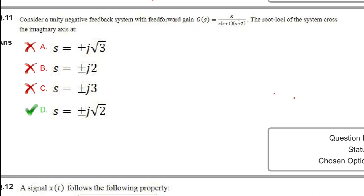G(s) is equal to k divided by s(s+1)(s+2). The root locus of the system crosses the imaginary axis at... To find where the root locus crosses the imaginary axis, we will take the Routh-Hurwitz tabulation, for which we require the closed loop characteristic equation.